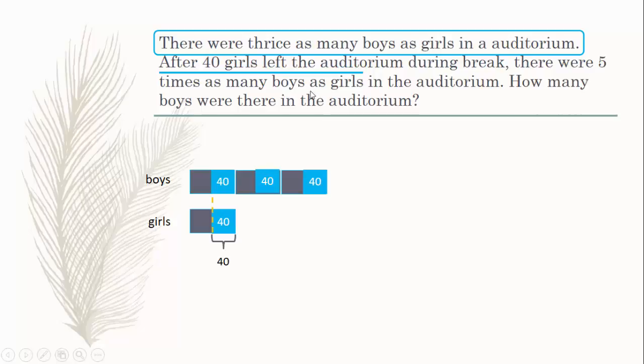After that, there were five times as many boys as girls in the auditorium. We're going to redraw this. This is before at first, and after 40 girls left, this 40 is gone. So this becomes the new one unit for the girls. This is one unit, not taking into account the 40 here. This comes here as one unit, and this again comes here as one unit. This is the new unit size.